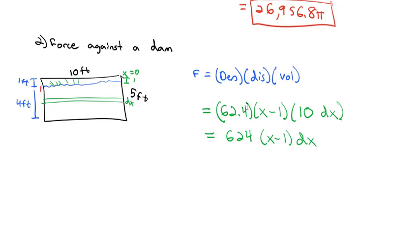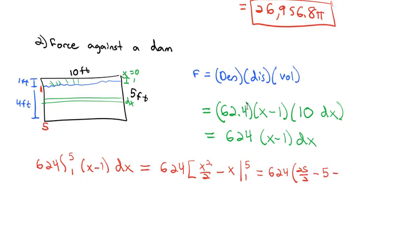Of course, we want all the strips from 1 foot down to 5 feet down. So we'll take the integral from 1 to 5, pulling the constant out: 624 times (x - 1) dx. That's 624 times (x²/2 - x) integrated from 1 to 5, which equals 624 times (25/2 - 5 minus 1/2 + 1). When we put that in our calculator, we end up with 4,992 foot-pounds of pressure against this dam.